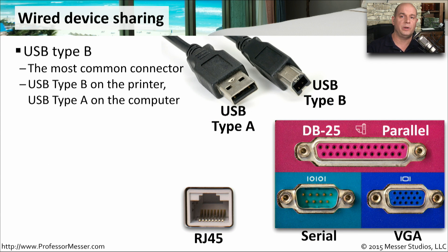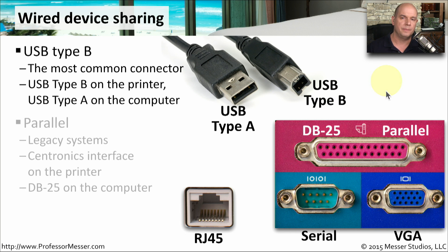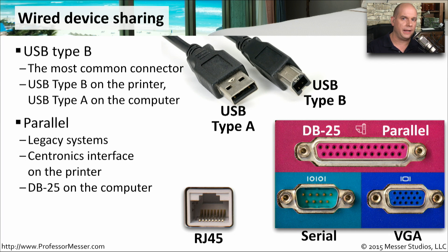If you're connecting this printer to a computer, it's probably going to connect via USB. The USB Type B connector is one of the more common ways to connect to one of these multi-function devices — the Type A connection goes to your computer, and the Type B connection is usually found on the back of the printer. If you have an older multi-function device, it may not have a USB connection and may instead connect via a parallel connection.